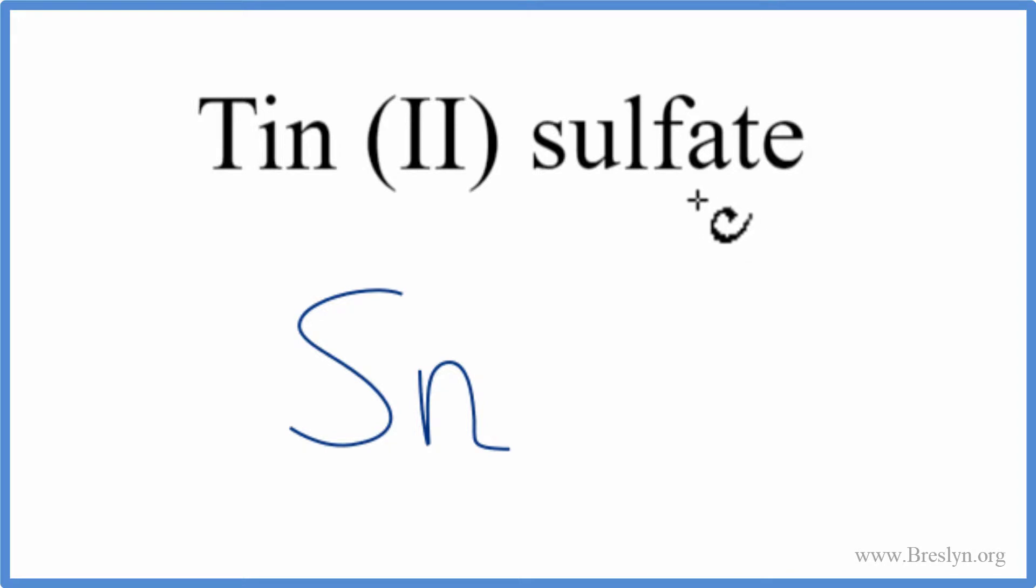Sulfate is not on the periodic table. It ends in A-T-E, which means it's a polyatomic ion. We can look it up on a table of common polyatomic ions, or you could have it memorized. Sulfate is SO4, 2-.